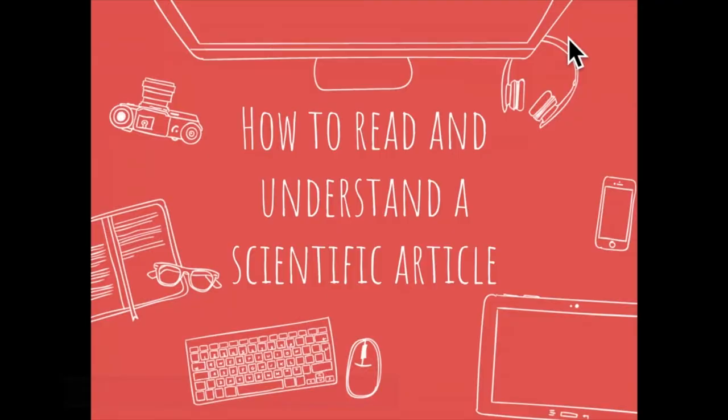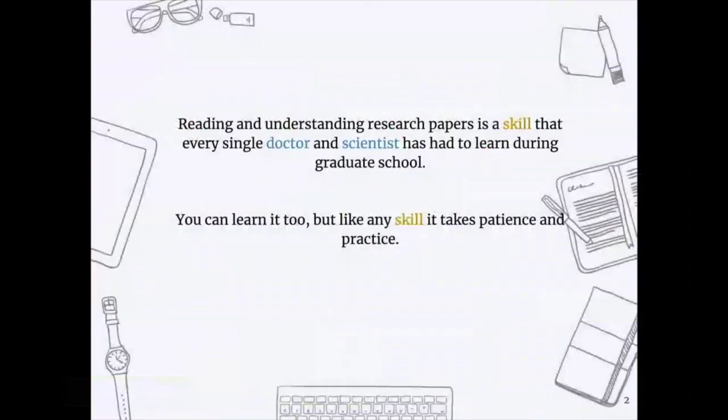How to read and understand a scientific article. To form a truly educated opinion on a scientific subject, you need to be familiar with current research in the field. To be able to distinguish between good and bad interpretations of research, you'll have to be willing and able to read the primary research literature for yourself.